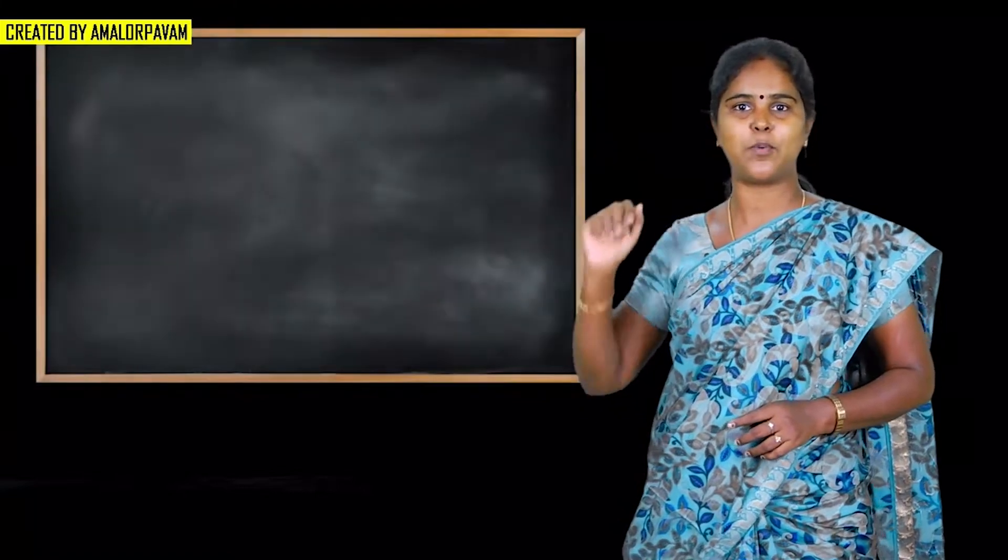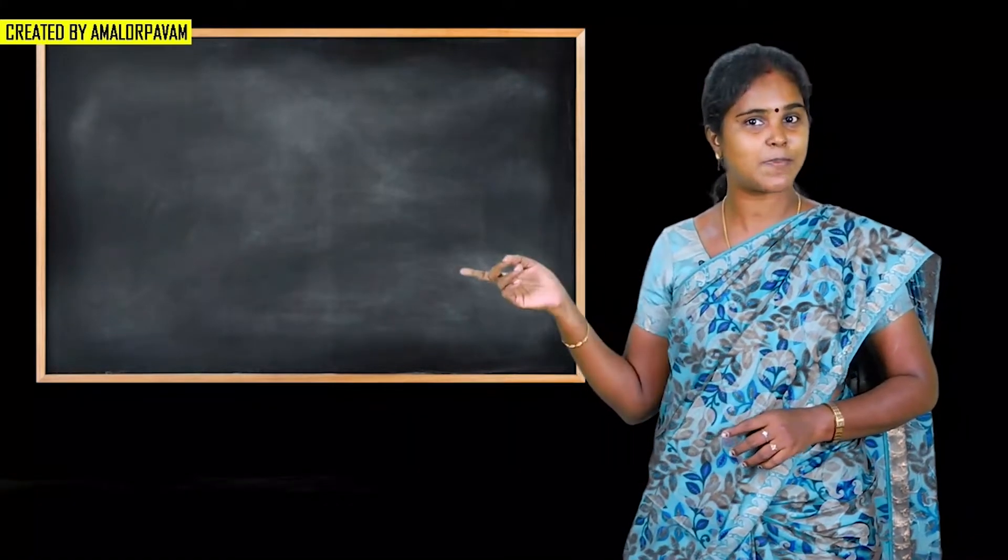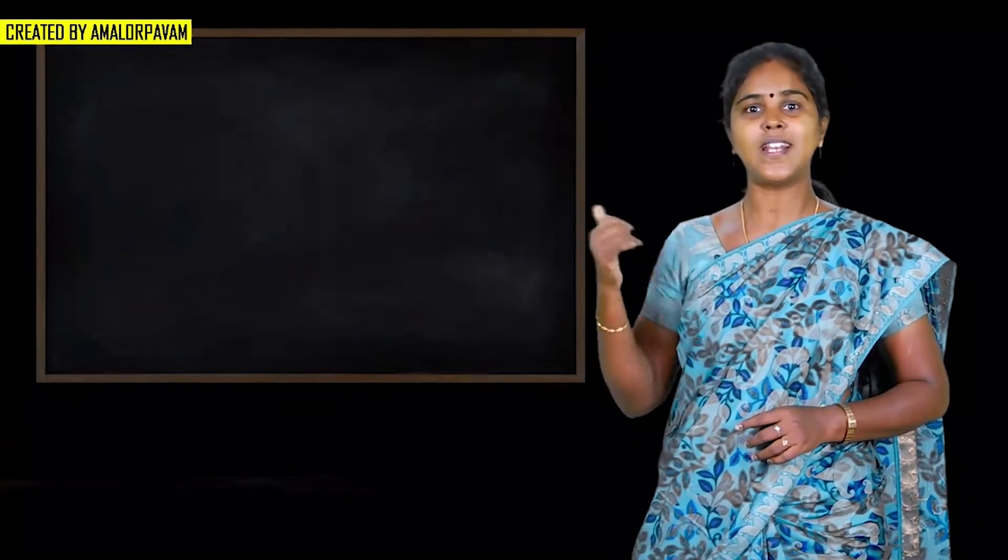Now, the next shape is rectangle. We can see some objects in rectangle shape. This is a blackboard — what is the shape of this blackboard? It is in rectangle shape. The next object is television. You all have it in your home, no? What is the shape of this television? It is in rectangle shape. The next object is door. What is the shape of this door? It is in rectangle shape.